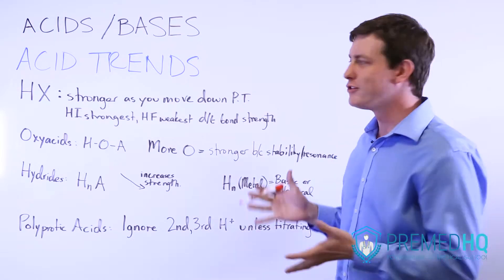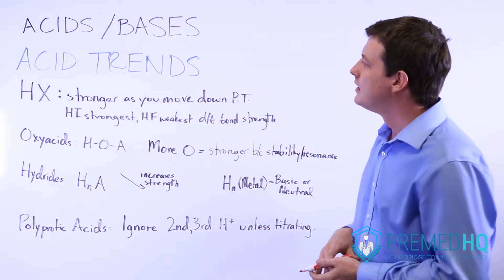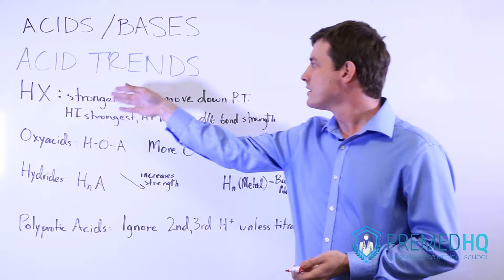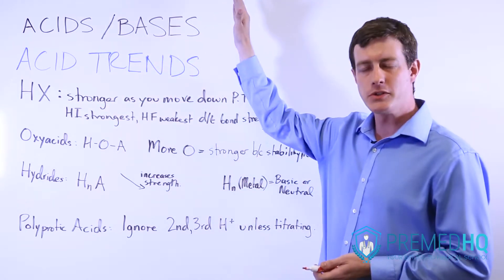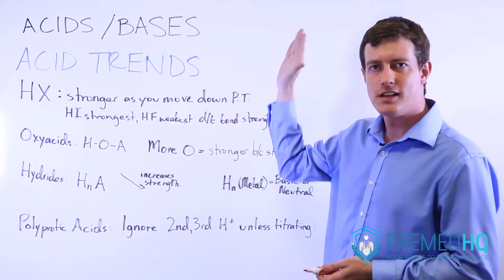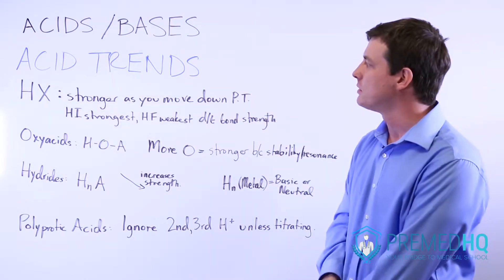Some general notes to be aware of regarding acidity trends. We'll start off with the halo acids which are HX and involve one hydrogen being bound to one of the halogens, which is the seventh column of the periodic table.